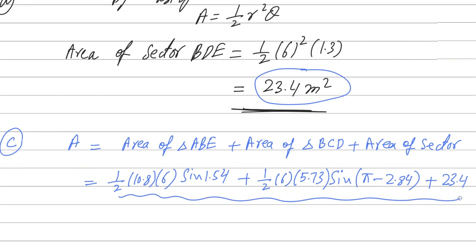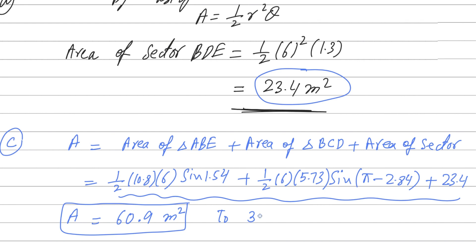Entering everything into the calculator gives 60.8907774. Rounding to three significant figures, the answer is 60.9 square meters. So 60.9 square meters is the required area of the garden to three significant figures. Hopefully you understand this part as well. If you have any doubt or question, please write in the comment box. Thank you.